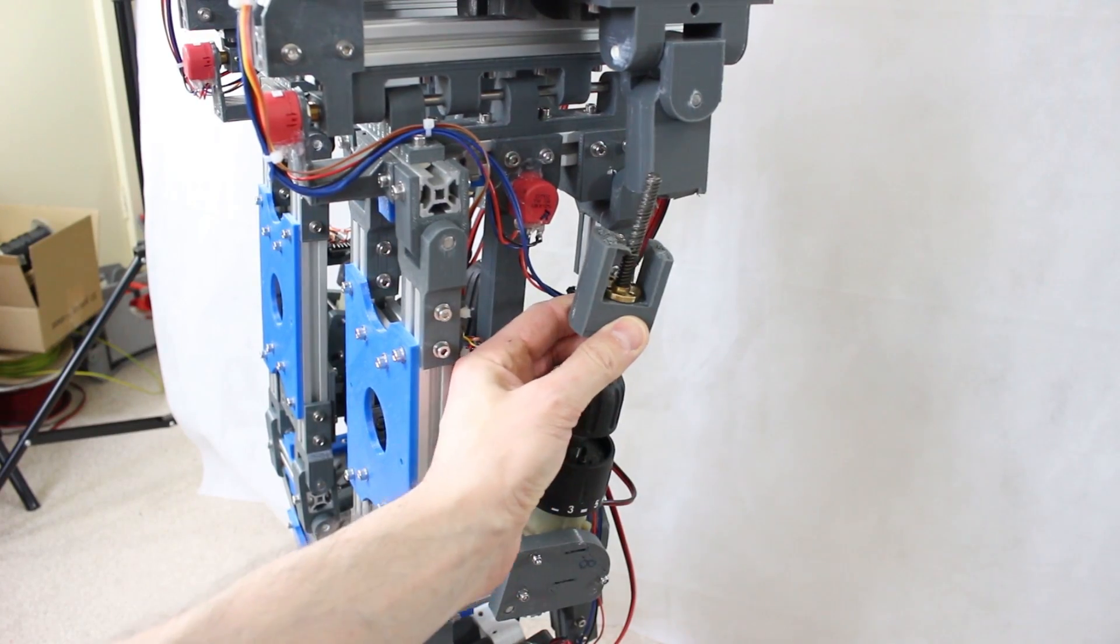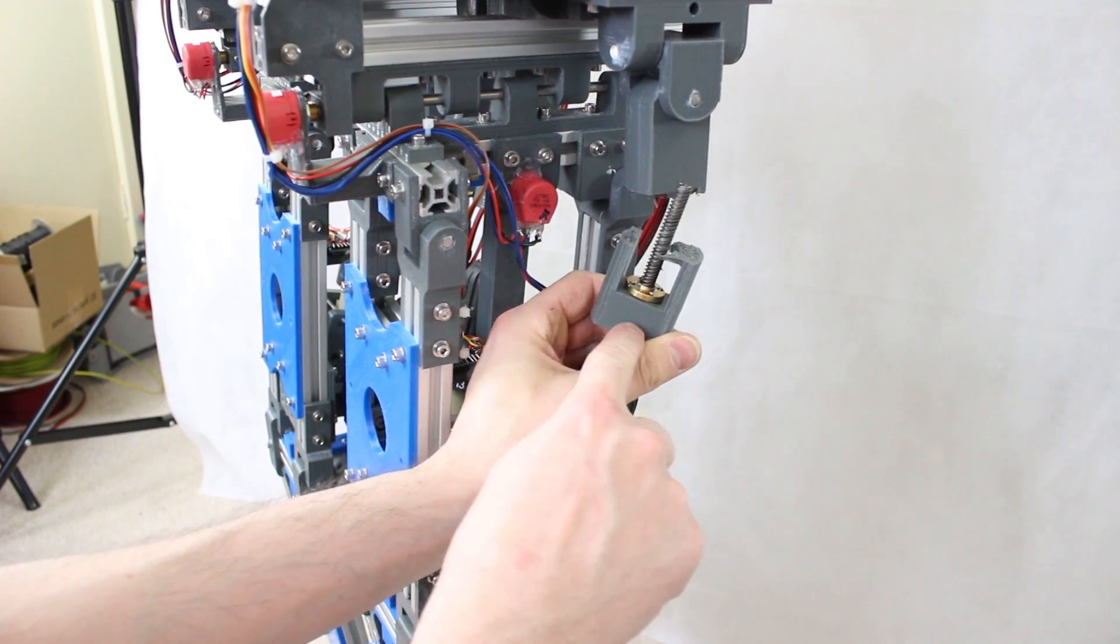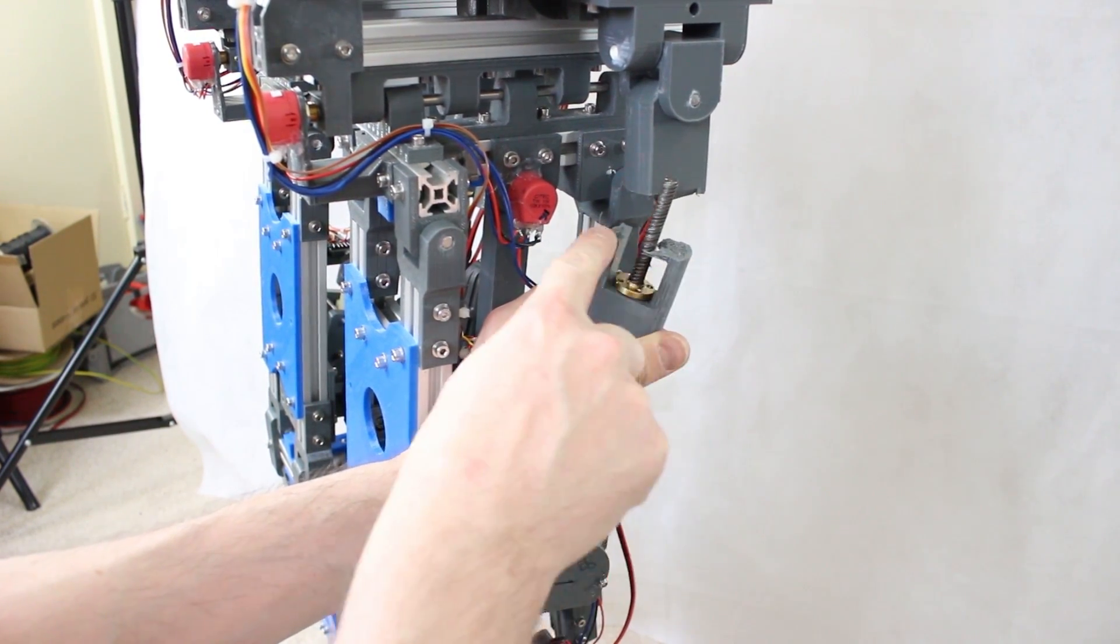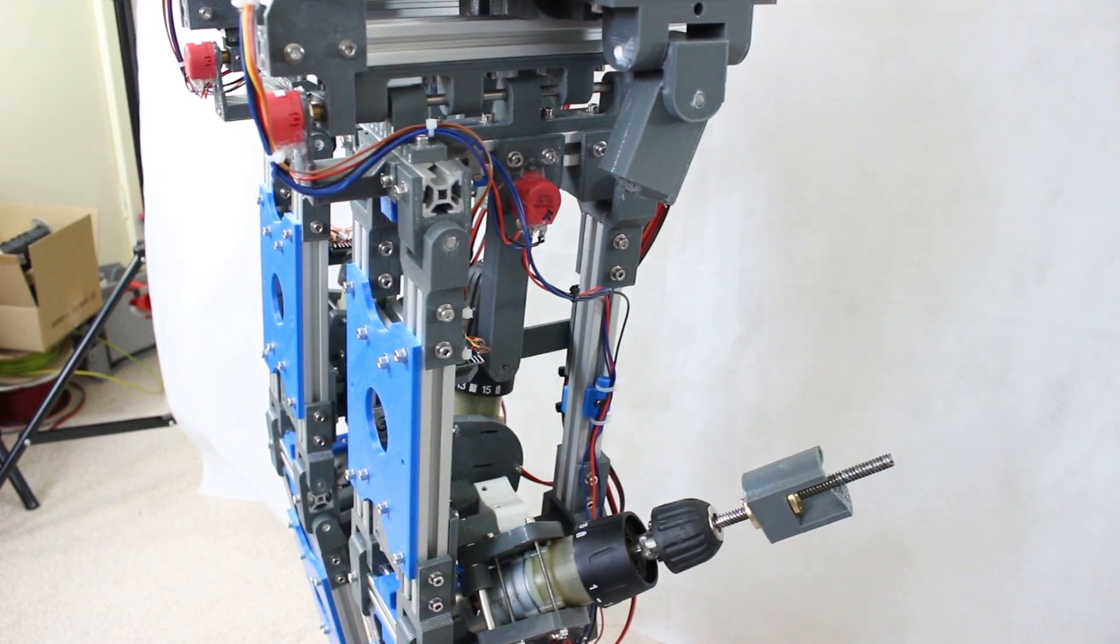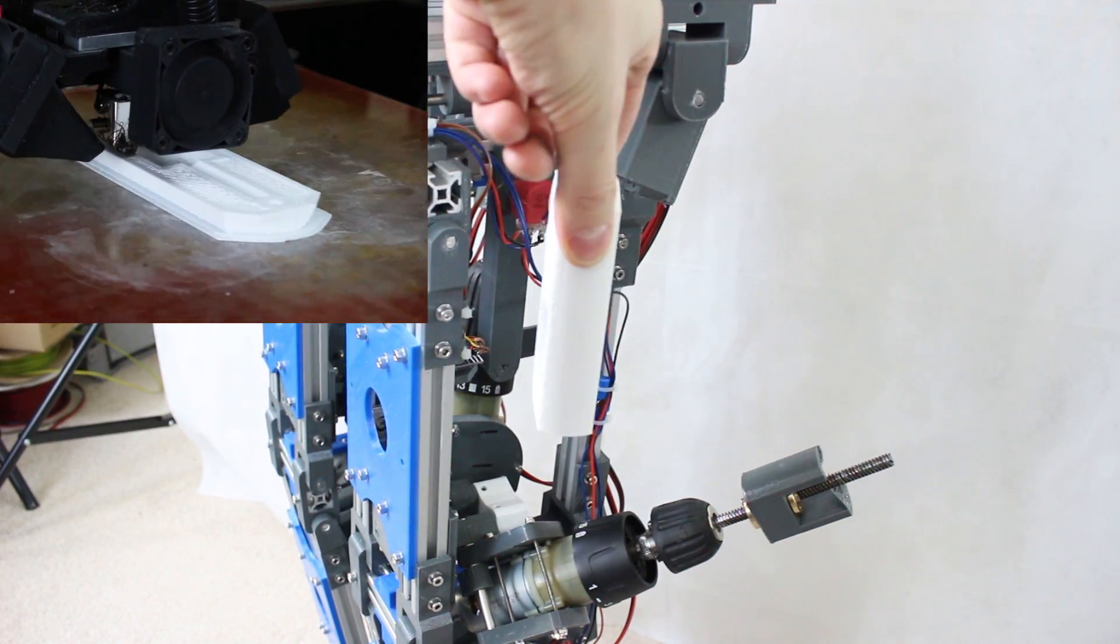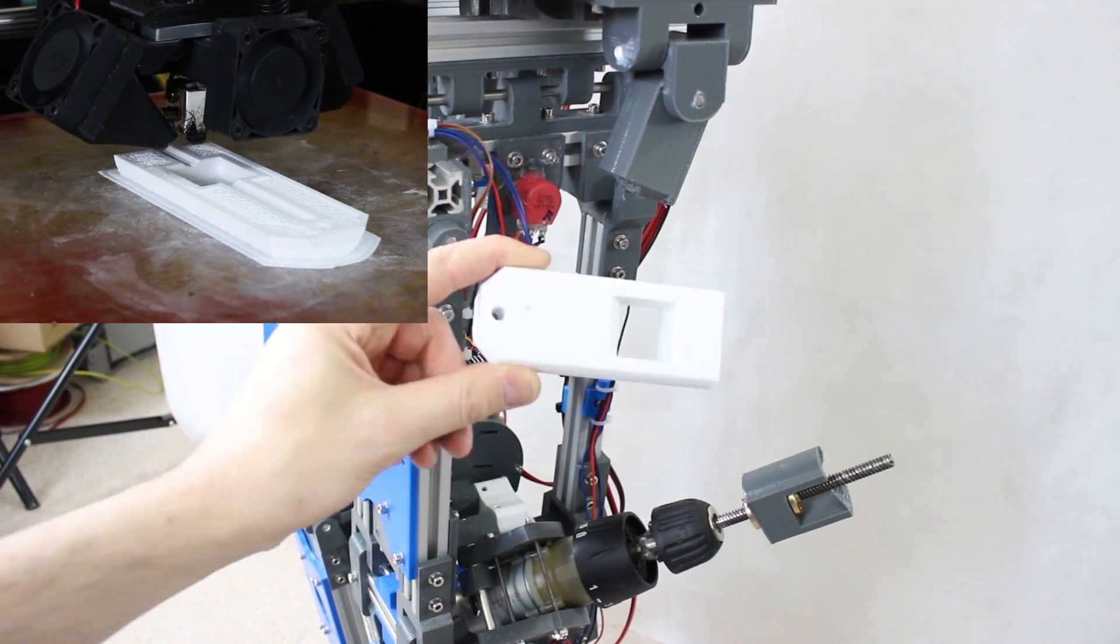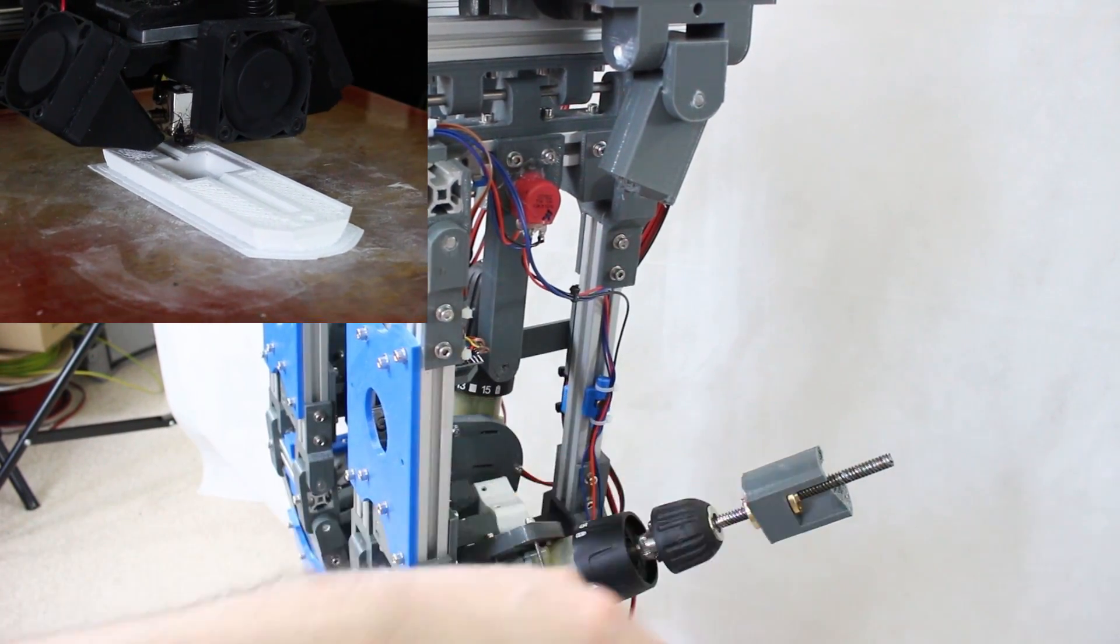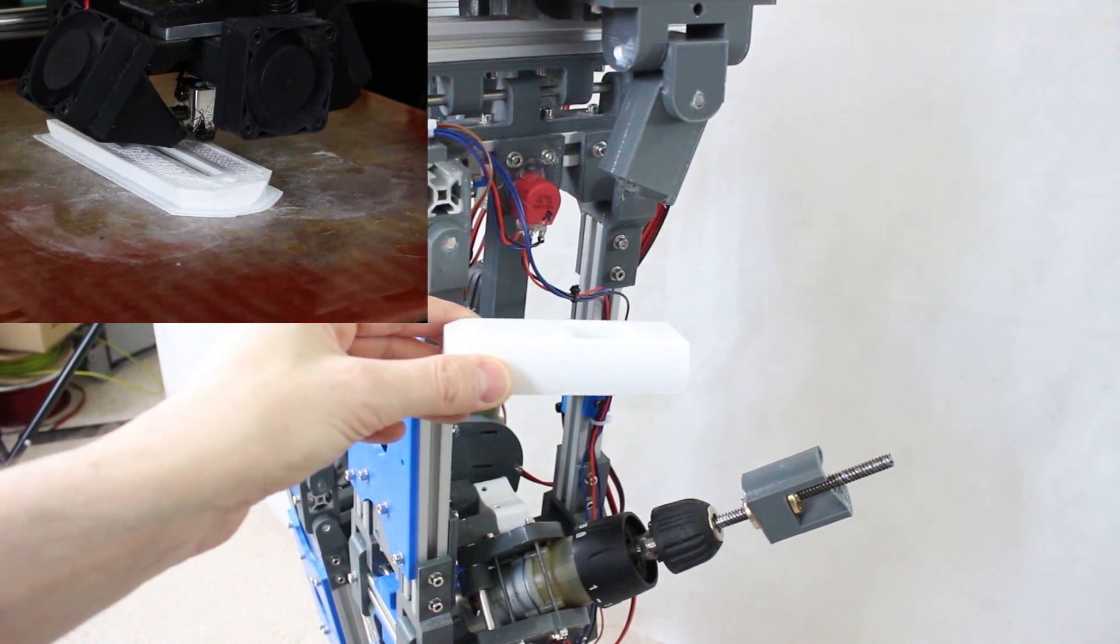But they were printed with the layer lines going this way. So this is the weak spot. And you can see that's just snapped there. So I've actually printed a replacement which I printed in this orientation. So the other way around instead of printing it like this on the bed. So the layer lines run that way. So it should be much stronger. It's still ColorFab HT. I've just run out of grey. So any more parts I have to print because they break will be white and you'll be able to see how that goes.